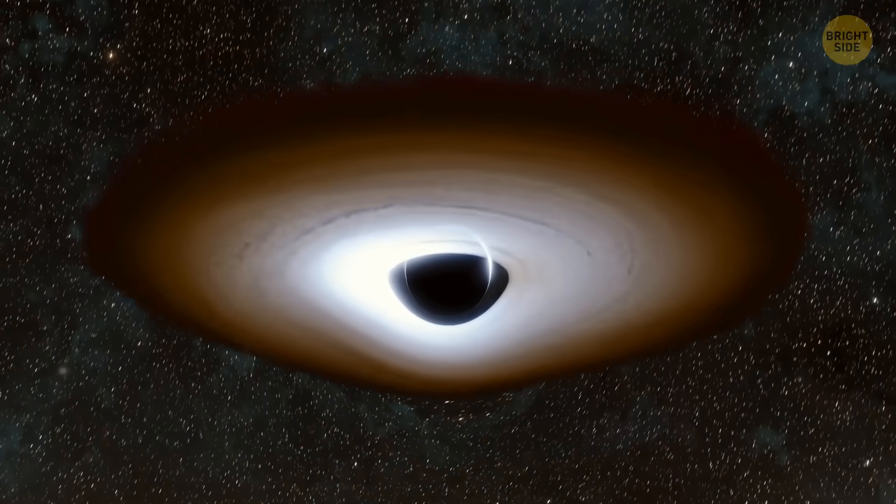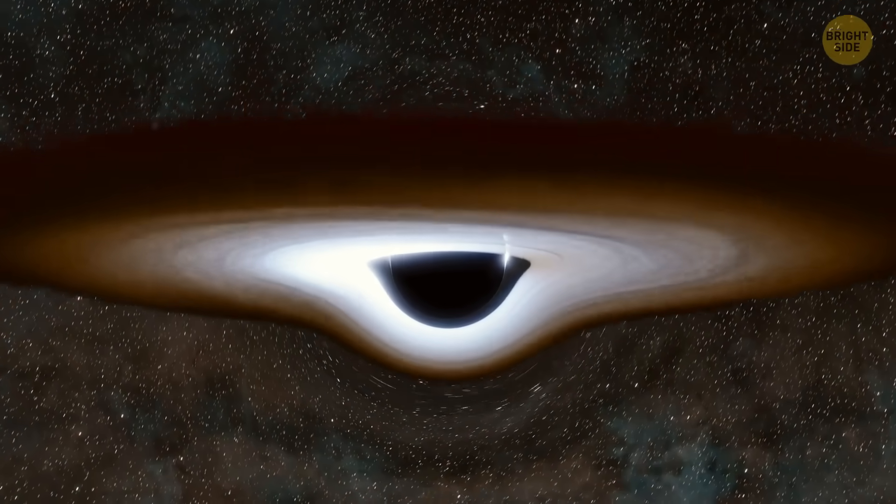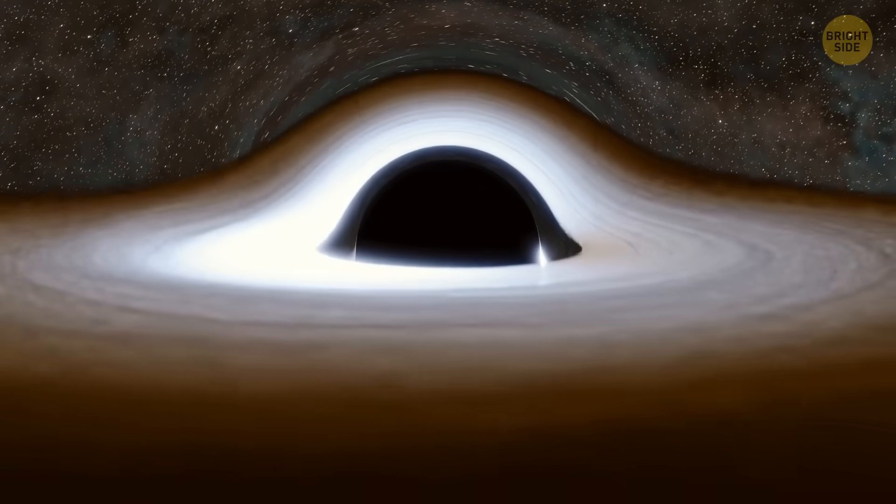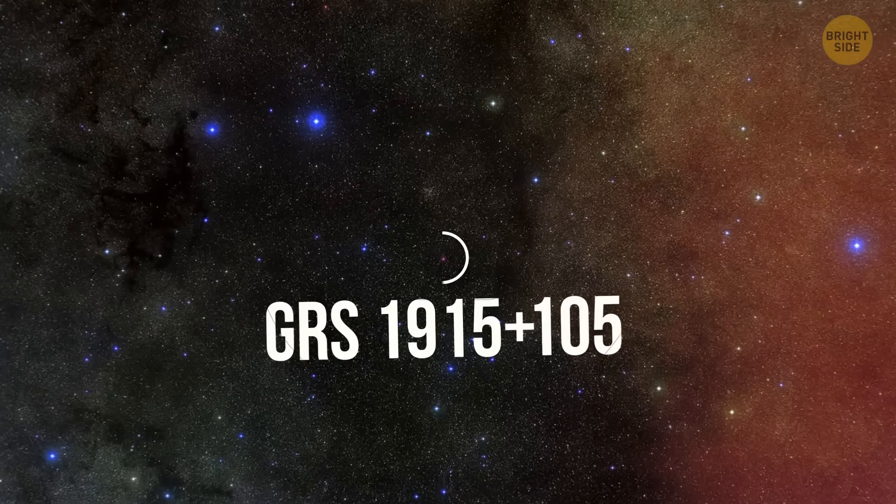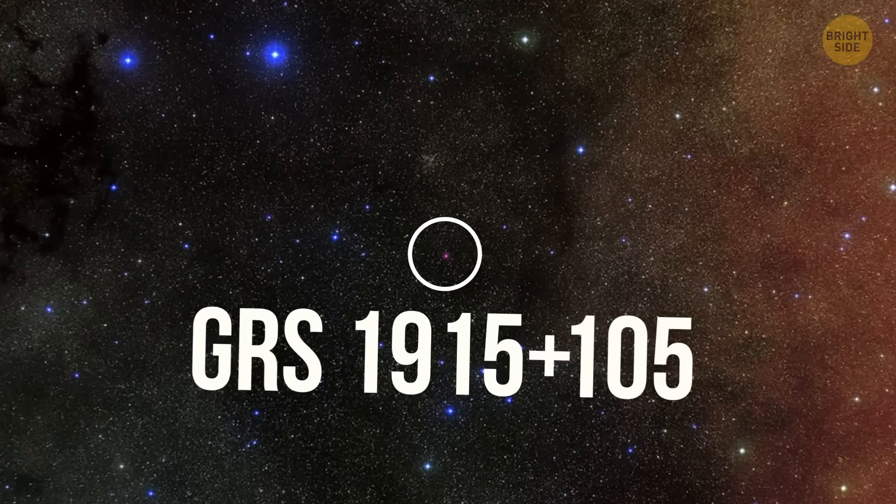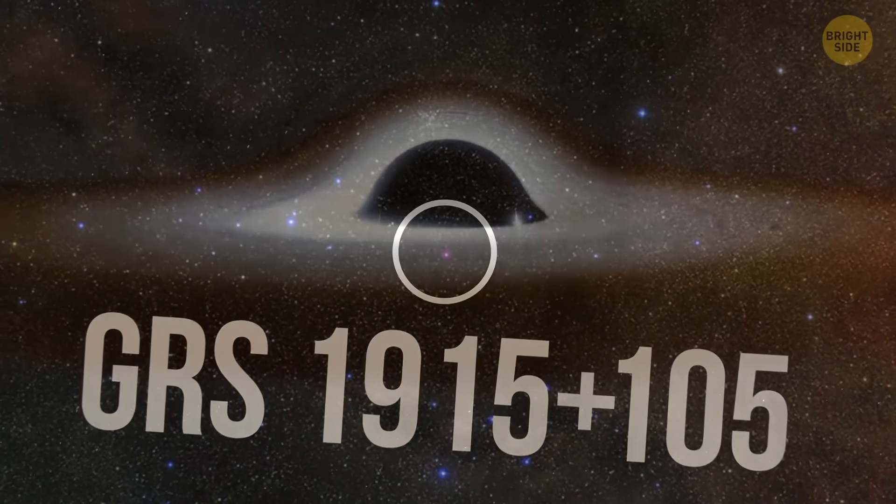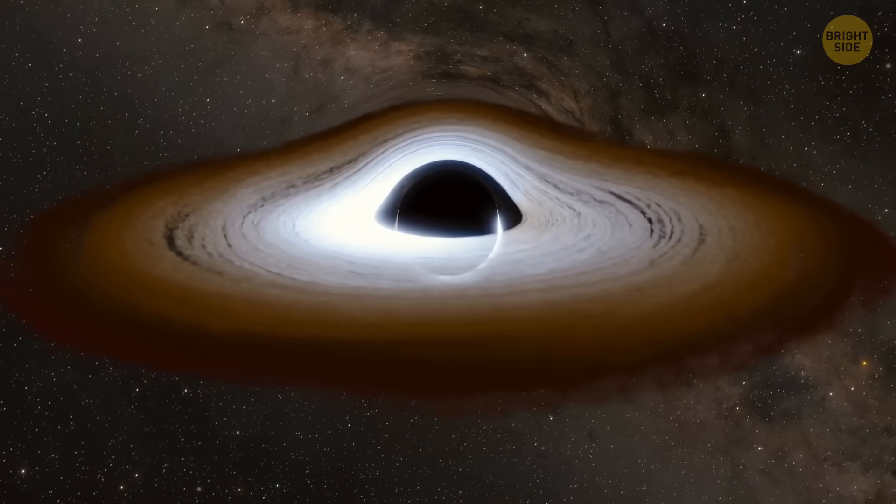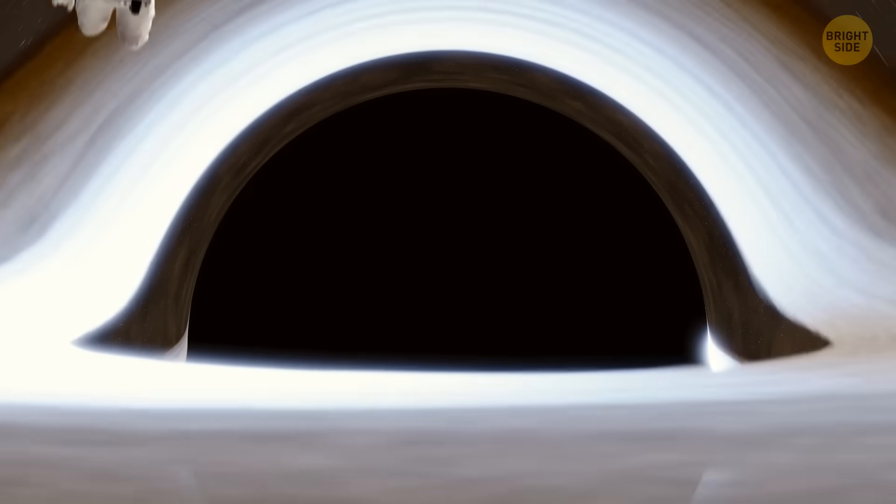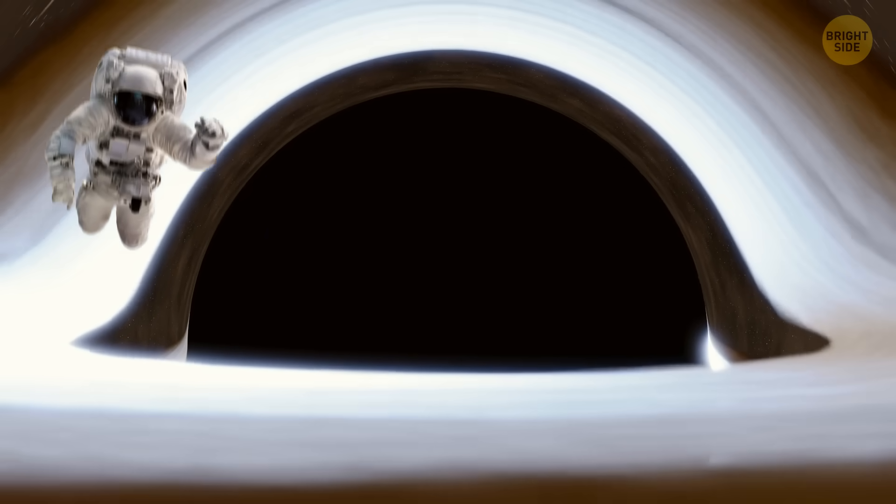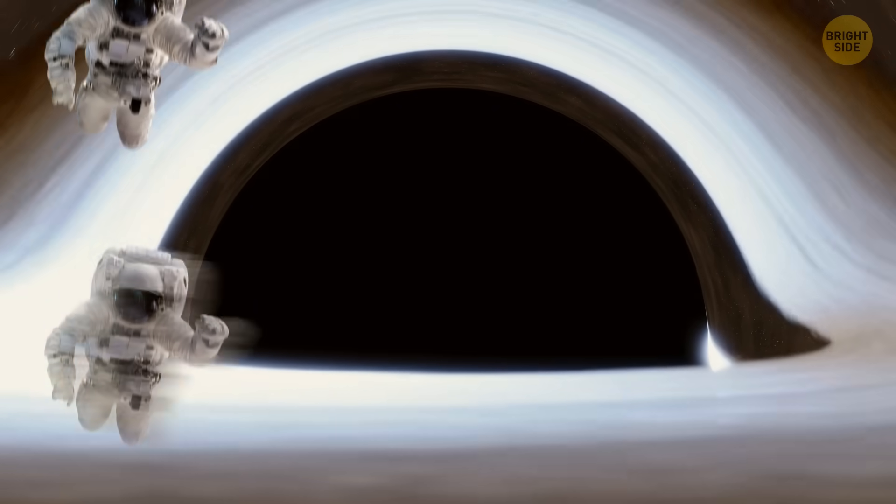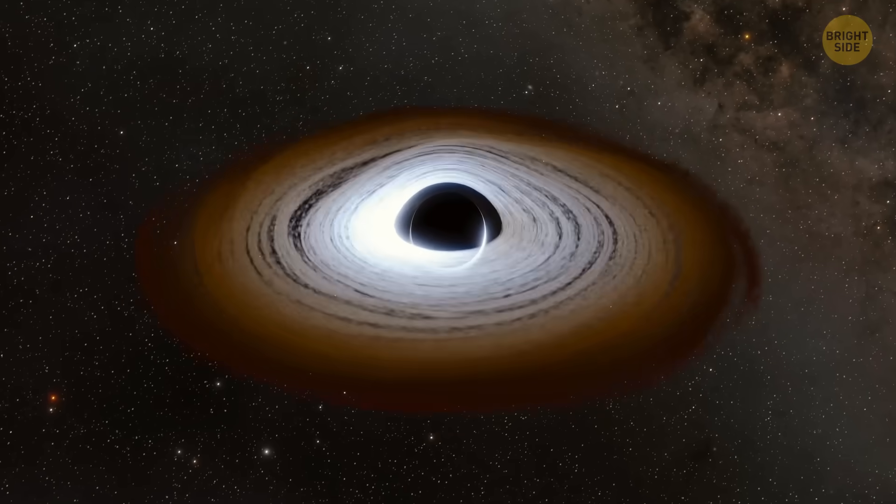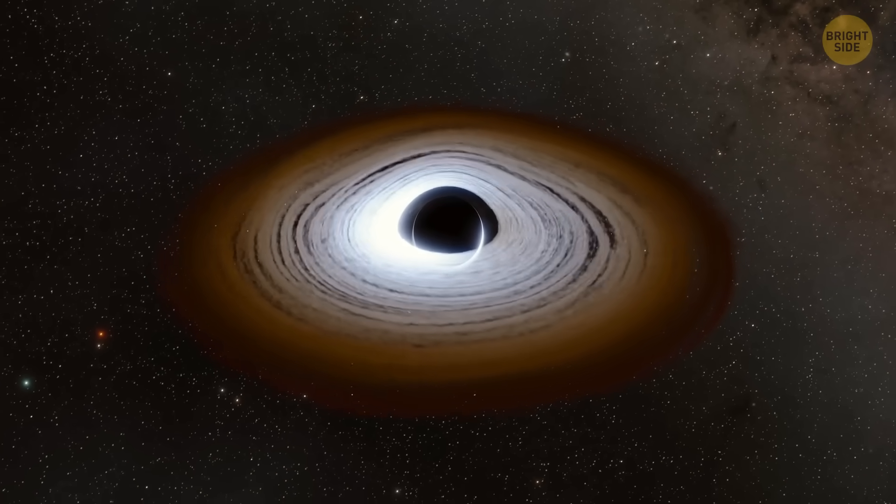Some black holes spin incredibly fast, twisting space around them at extreme speeds. One example is a black hole located in the constellation Aquila, about 35,000 light-years from Earth. This black hole spins at a staggering speed of more than 950 times per second. If you could place an object on the edge of this black hole's event horizon, it would spin around the black hole at 333 million miles per hour. That's nearly half the speed of light.